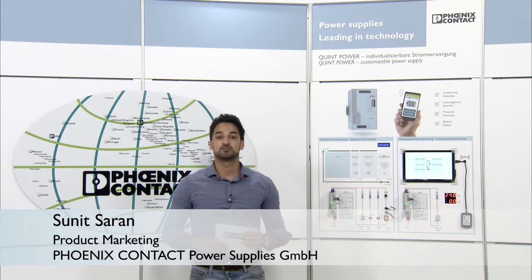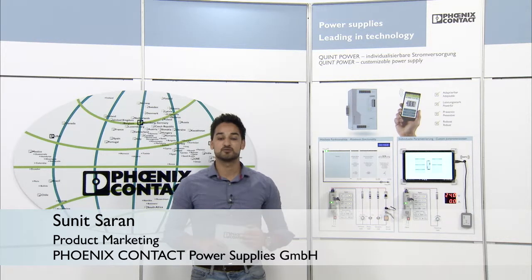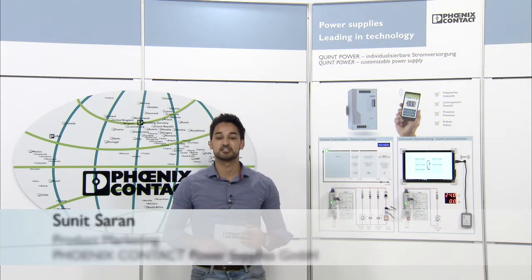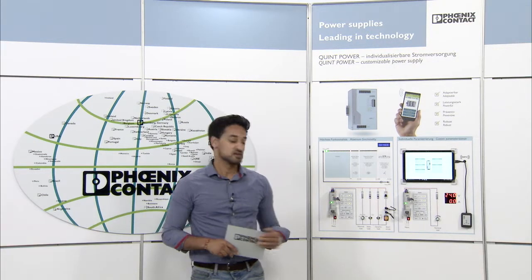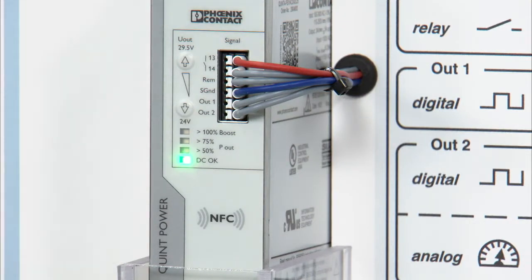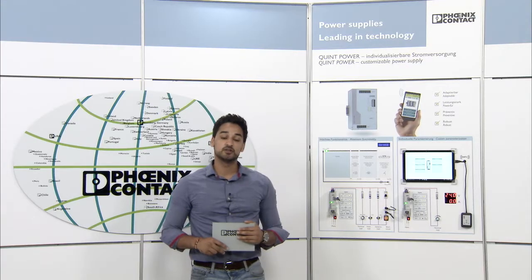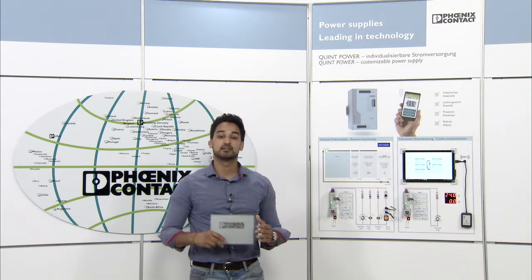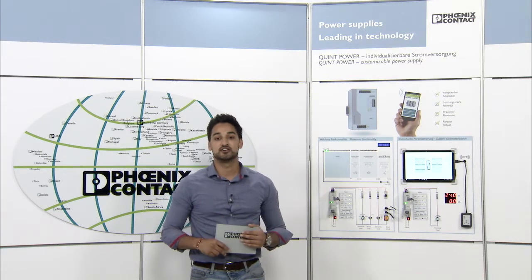Hello and welcome to the videos about the new Quint Power of the 4th generation. In this video I want to show you what makes a Quint Power preventive and how you can monitor your application securely with it. There is a bar graph on the front of the device, so just by looking at the Quint Power you will get the load status of your application. Therefore you do not necessarily need a measurement instrument.